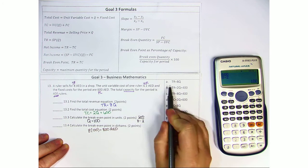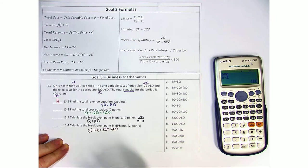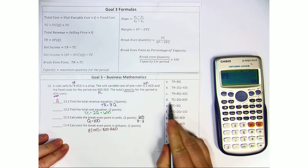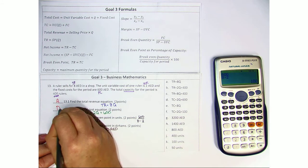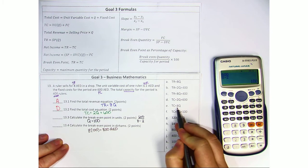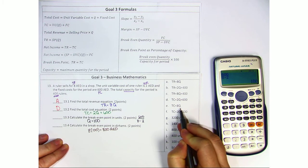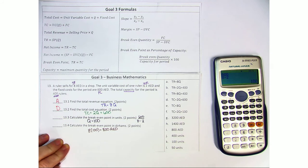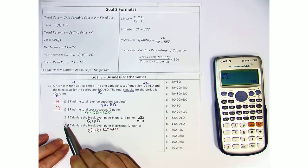TR equals 8Q, well that is A. The total cost equation is 2Q plus 600, so that would be D. Now if you notice, you have to be really careful because total cost could also equal 8Q. So TC and TR are two very different equations, and you need to watch for that.